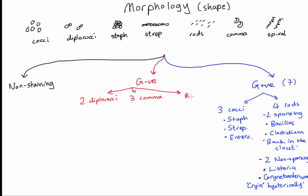So gram negative, two of them are diplococci: Neisseria and Moraxella. Three are comma shaped: H. pylori, Campylobacter, and Vibrio.